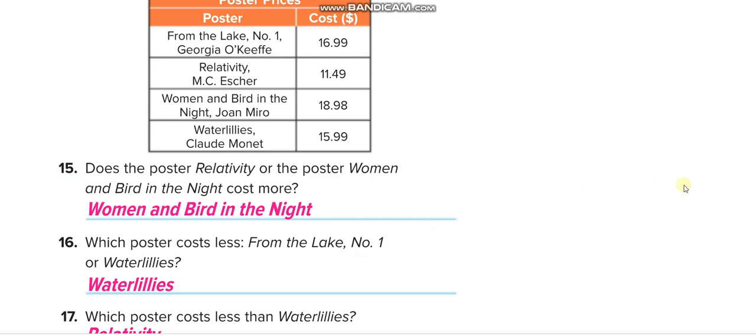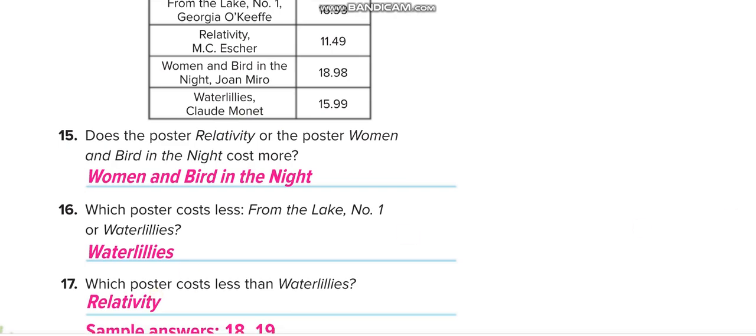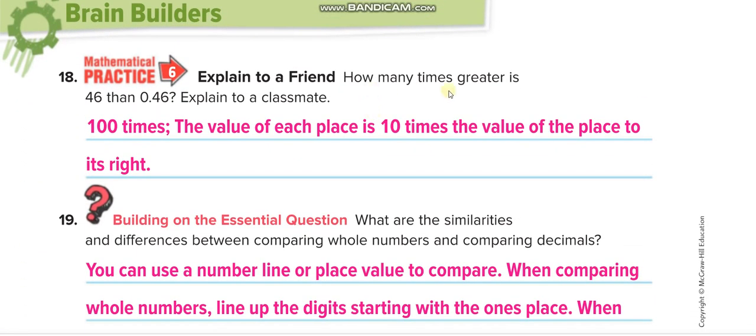How many times greater is 46 than 0.46? We move the decimal point two times. You know that each time we are moving towards left, it means we are moving 10 times greater. Towards right, we are moving 10 times less. So we move 2 times, so 10 times 10, that is 100 times. It means what? 0.46 times 100 will give you 46.